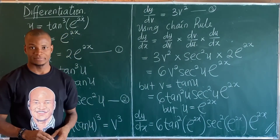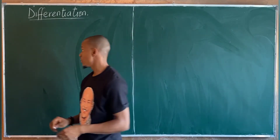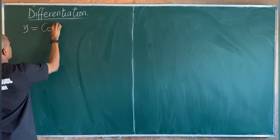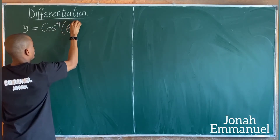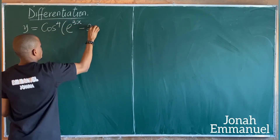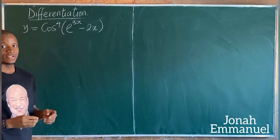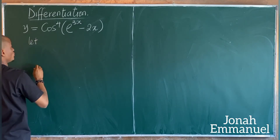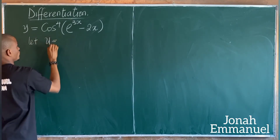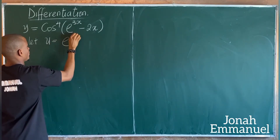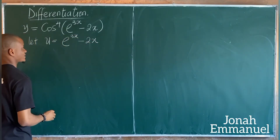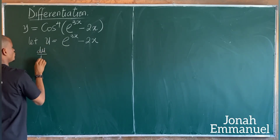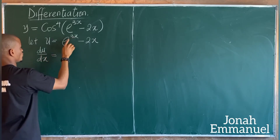Example two: let's say y equals cos to the power 4 of (e^(3x) minus 2x). I'm asked to find dy/dx. Case one, using chain rule: let u be equal to the term in the bracket, which is exponential 3x minus 2x.